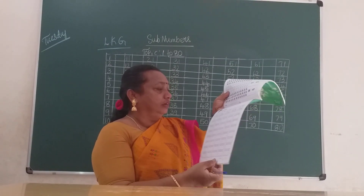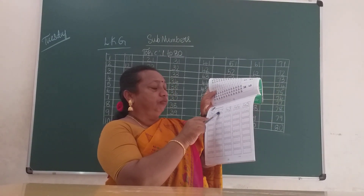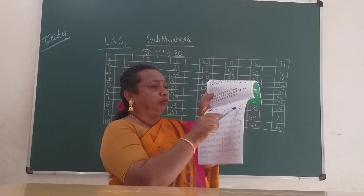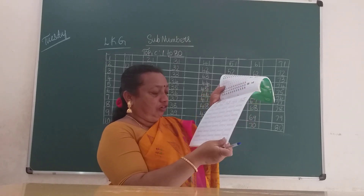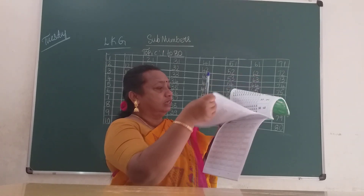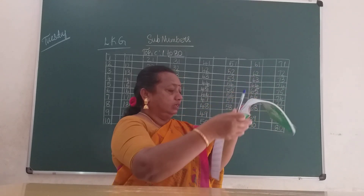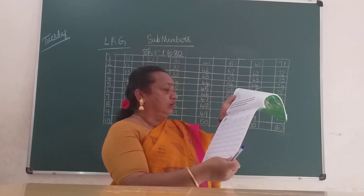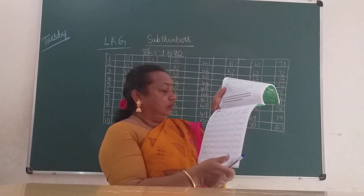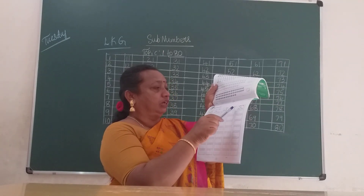Trace and write, children. Which number is this? 41, 42, 43, 44, 45. Copy page number 69. Take out your page number 70. 70 is also over. Next number 71. 46, 47, 48, 49, 50.